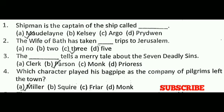Next question: The Wife of Bath has taken dash trips to Jerusalem. The correct answer is C, that is three. Next question: The dash tells a merry tale about the seven deadly sins. The correct answer is D, that is the Parson. Next question: Which character played his bagpipe as the company of pilgrims left the town? The correct answer is A, that is the Miller.